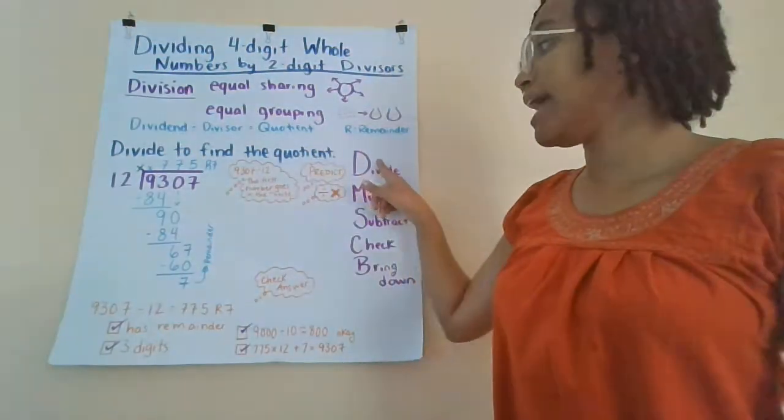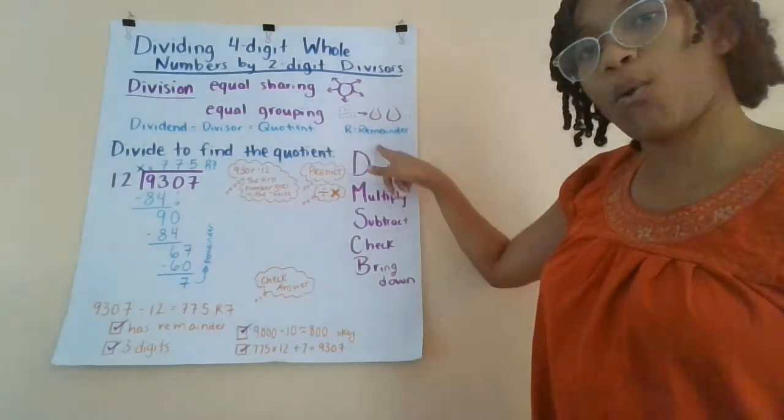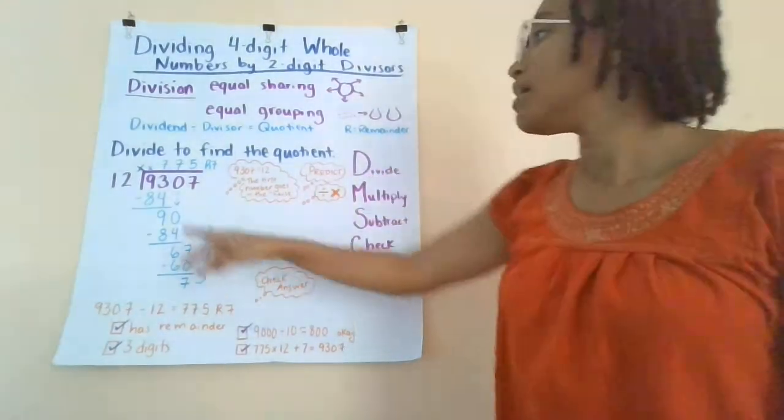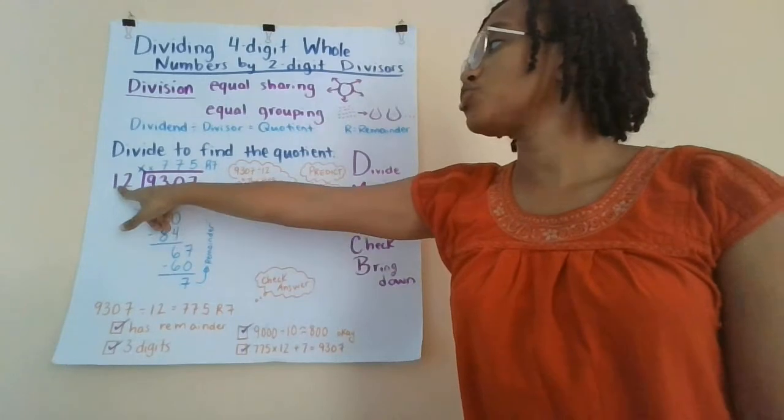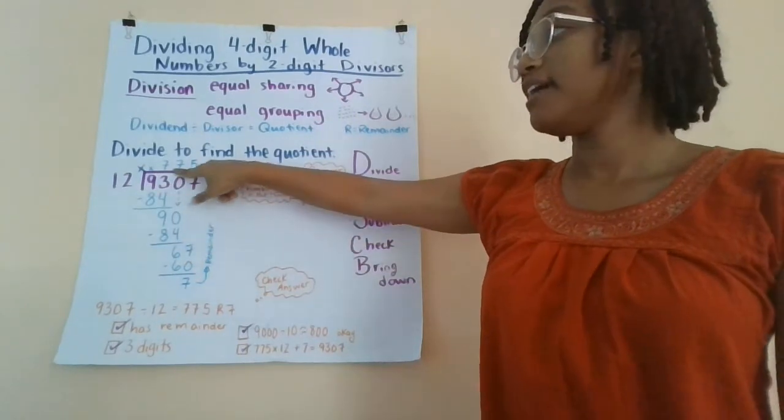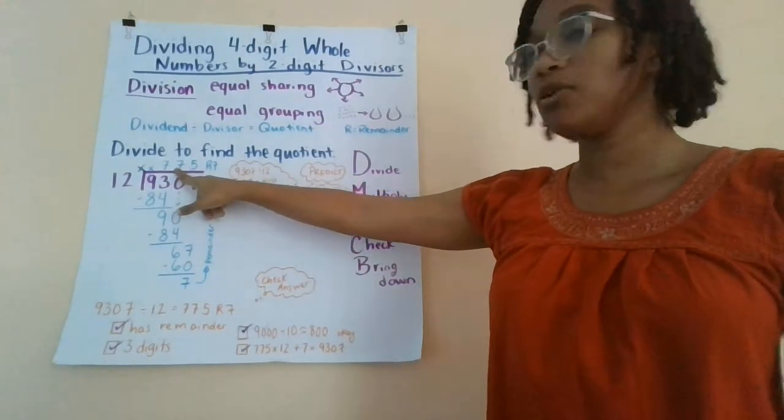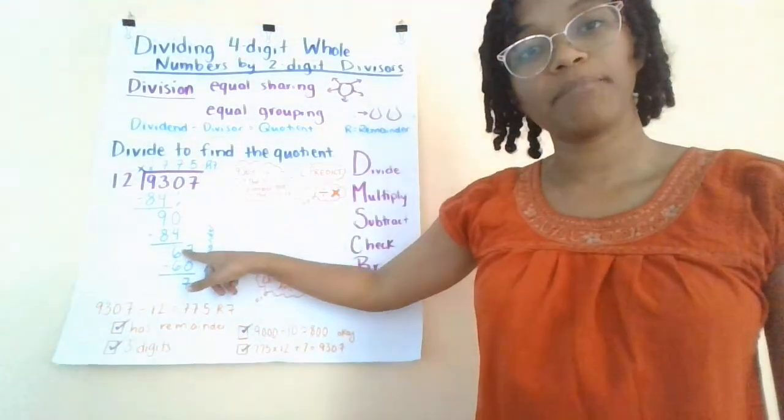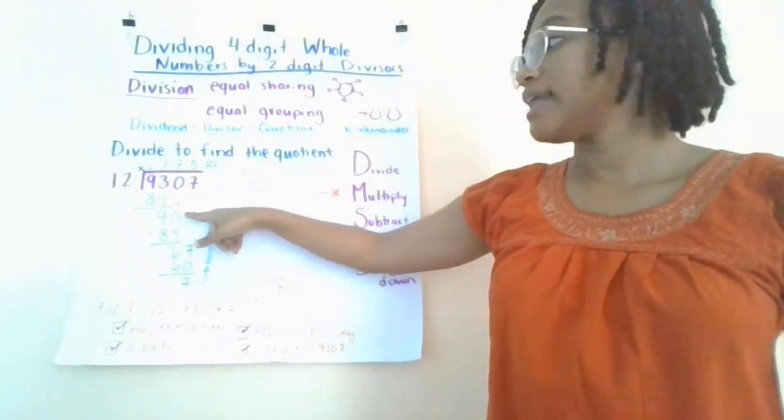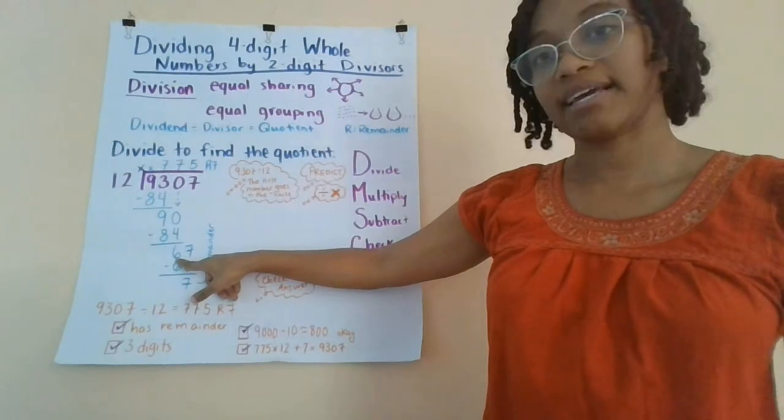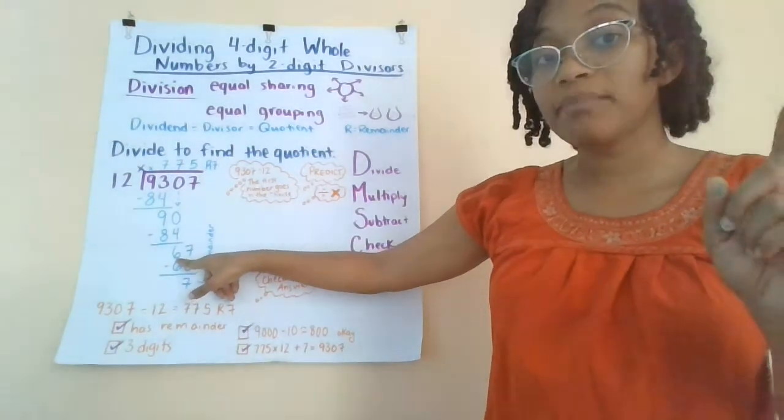Now I divide again. We finish the whole system. Go back up to divide. How many times does 12 fit into 90? It fits seven times. Now I multiply. Seven times 12 is 84. Now I subtract. 90 minus 84 is 6. Now it's time to check.